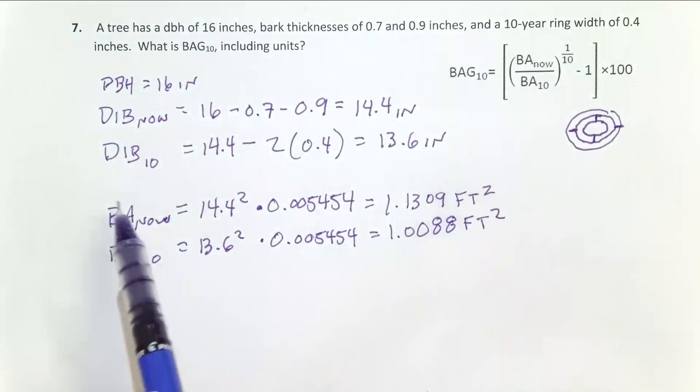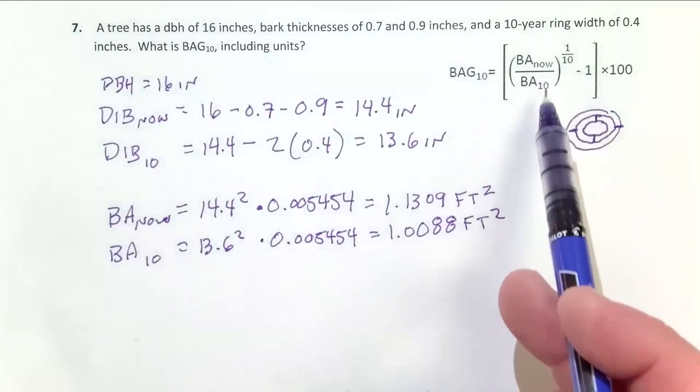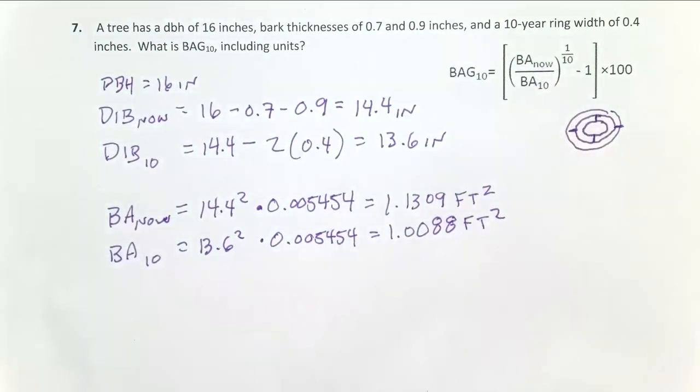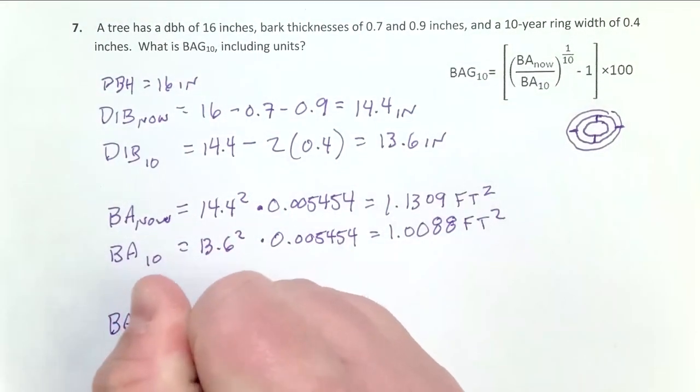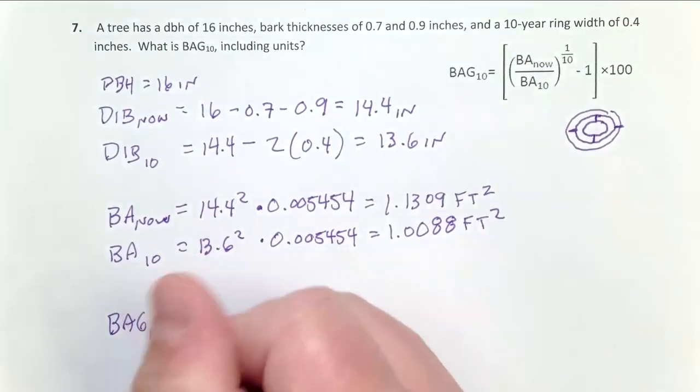Okay, so now we have these two numbers, basal area now and 10 years ago, which we can see in our equation right here. So now it's just a matter of plugging all that together to get our basal area growth rate for the last 10 years. And remember, this is going to be a compound interest formula. So it will be expressed as a percentage.